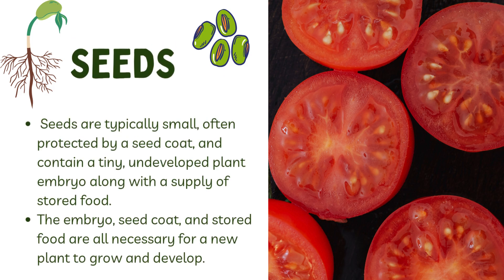Next is seed. Seeds are typically small, often protected by a seed coat, and contain a tiny undeveloped plant embryo along with a supply of stored food. The embryo, seed coat, and stored food are all necessary for a new plant to grow and develop.